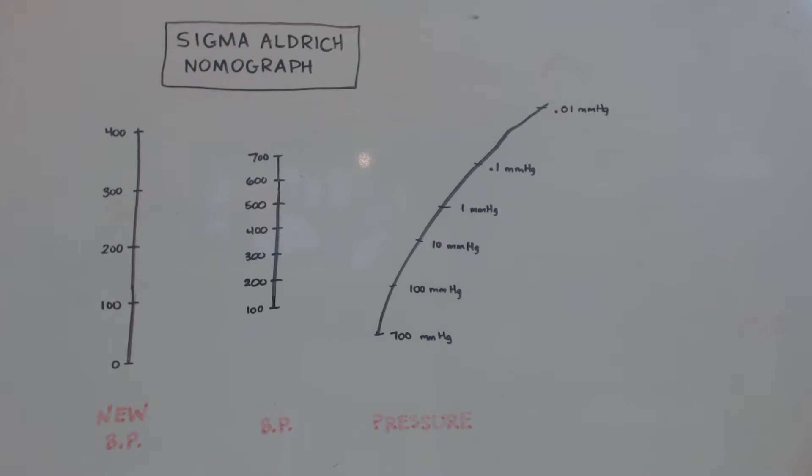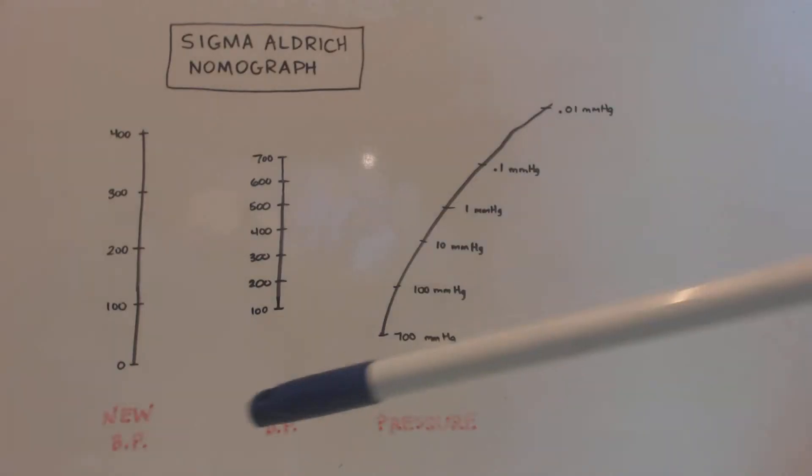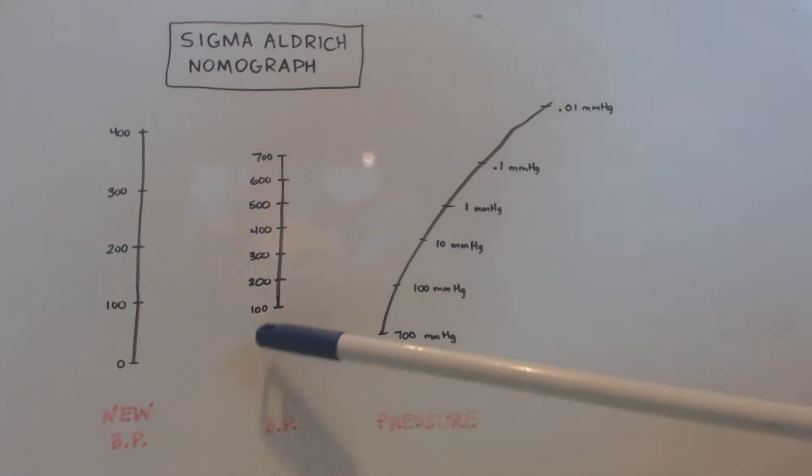Top two ones will be the same thing. The one that says Sigma Aldrich Nomograph, that's the one you click on. And it'll go to this, what I'm showing you on the screen right now. First one there says new boiling point. That would be your boiling point under your, because what a nomograph is, is it tells you the boiling points of liquids at different pressures. Only a vacuum, different lower pressure. This is your new boiling point. This is your boiling point at atmospheric pressure. And this is your new pressure.